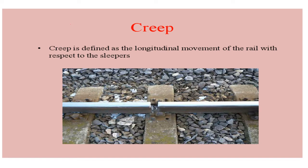Creep is defined as the longitudinal movement of the rail with respect to the sleepers. Whenever there is a longitudinal movement in the rails, that movement is known as creep. To clearly understand that creep has occurred, or what indications are given such that we realize that a creep has been formed.